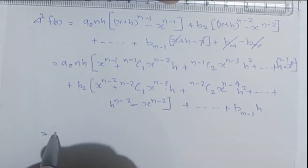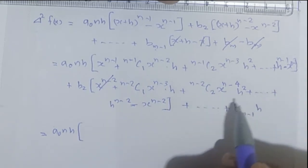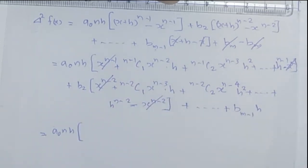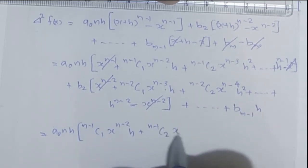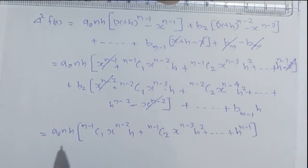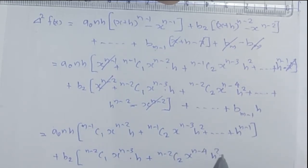Rewriting this, x^(n-1) terms cancel, and what remains is a0·n·h times [(n-1)C1 x^(n-2) h + (n-1)C2 x^(n-3) h² + ... + h^(n-1)] plus b2 times [(n-2)C1 x^(n-3) h + (n-2)C2 x^(n-4) h² + ... + h^(n-2)] plus etc. plus b(m-1)·h.